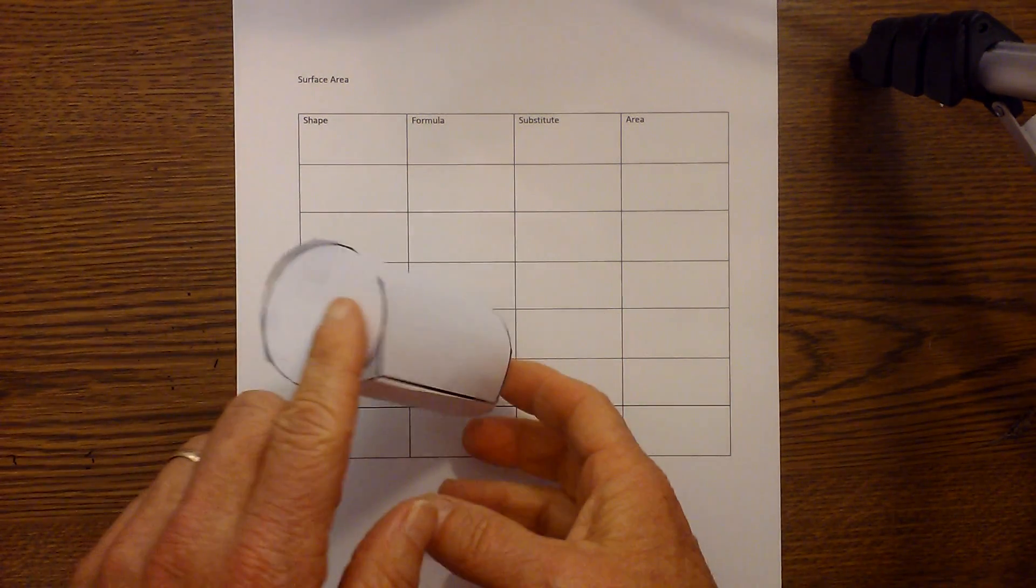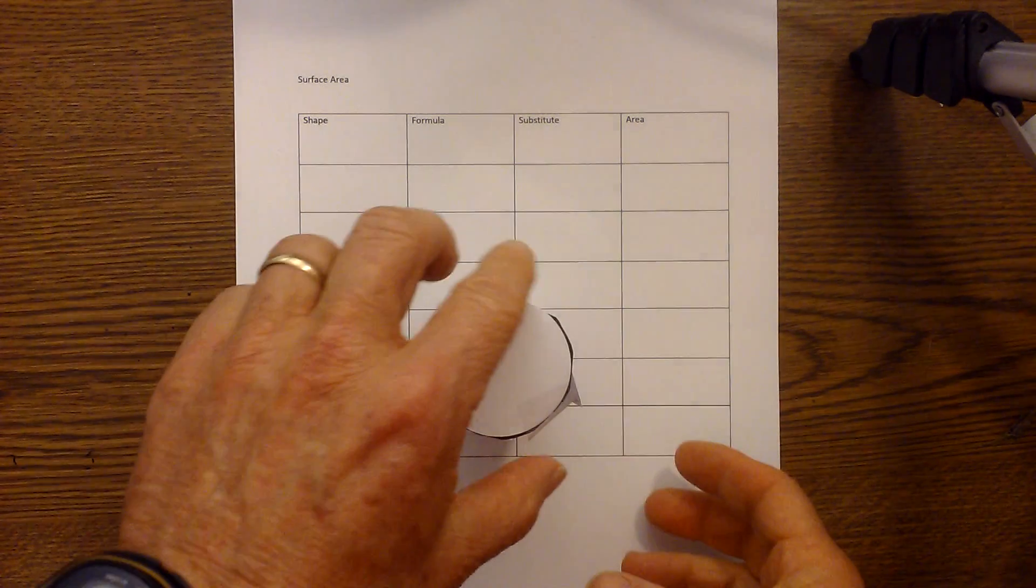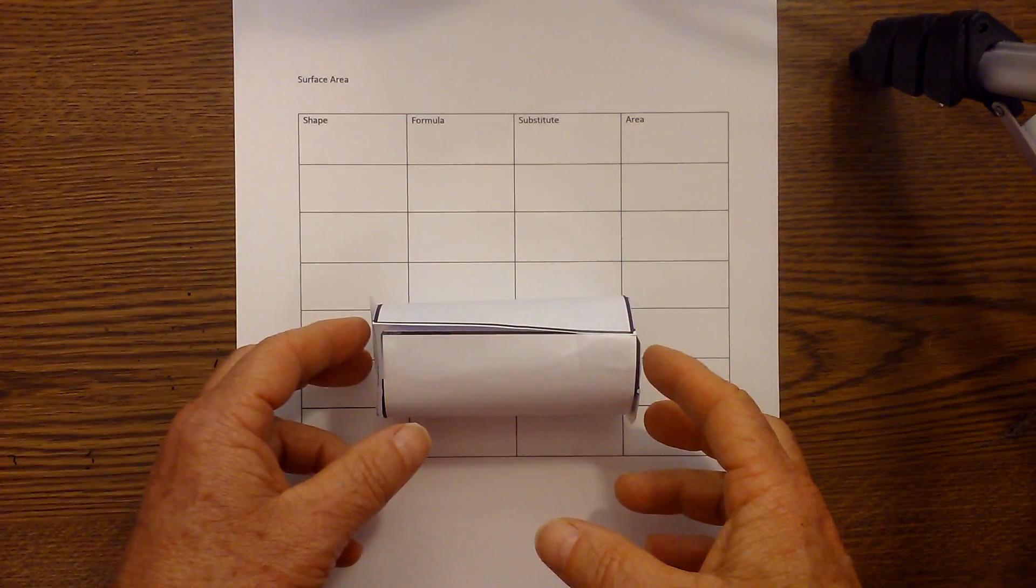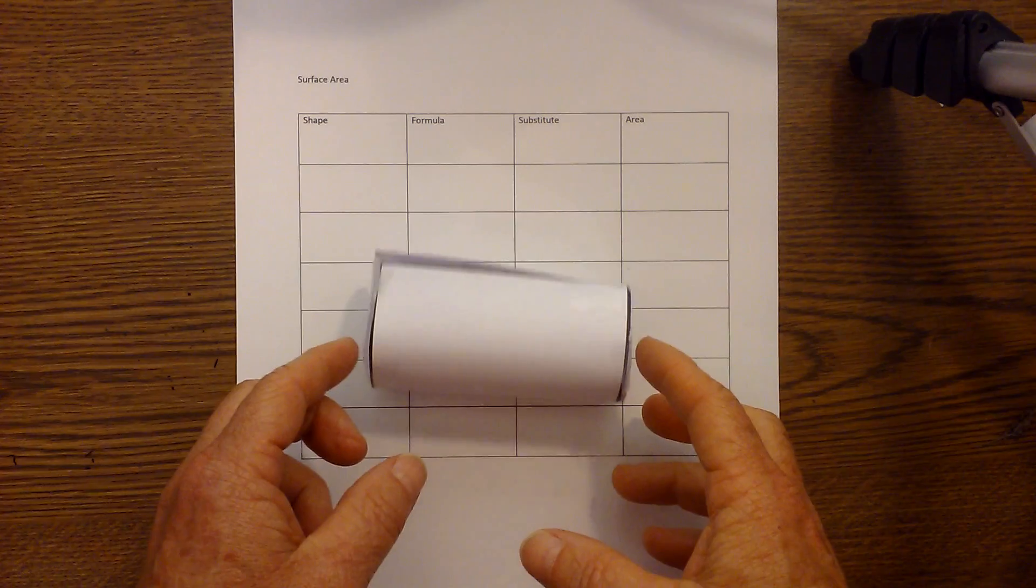As you can tell I have a 3D cylinder here and I have two things that will hopefully make this a little bit easier when calculating the surface area.